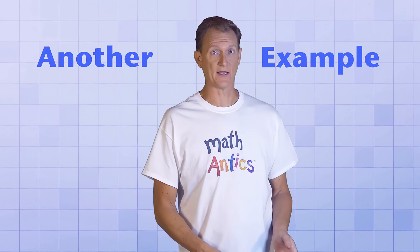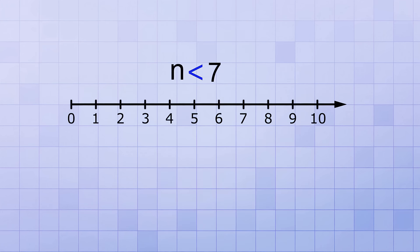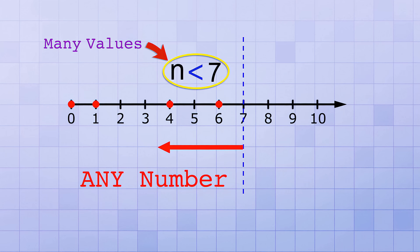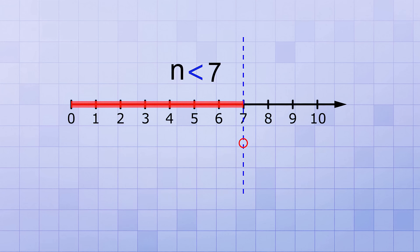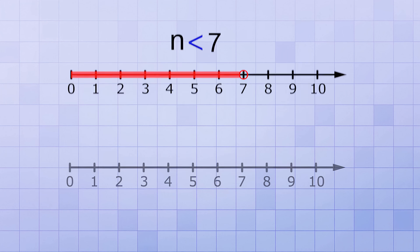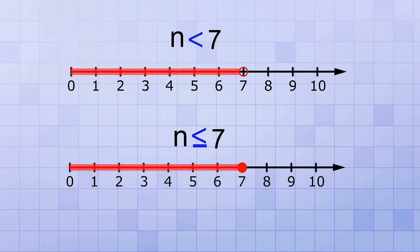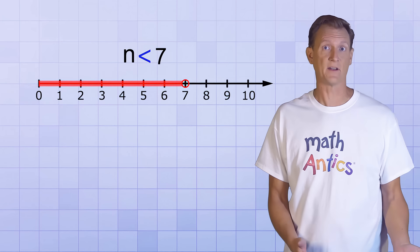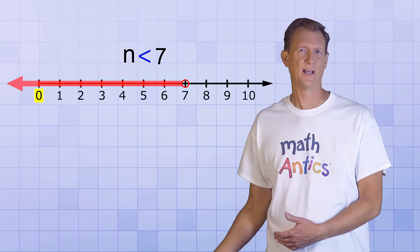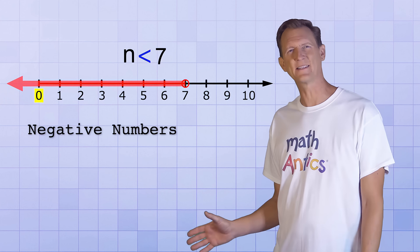Let's try another example. Let's graph the inequality n is less than 7. Just like with the last example, you can probably think of many values of n that would make this statement true. 6 is less than 7, so is 4, so is 1, so is 0. Any number that's to the left of 7 on the number line will work for this inequality, because values decrease as you go from right to left. Since there are an infinite number of possible answers, we'll just draw a line to cover all of them. And we'll leave an open dot exactly at 7 to show that point is not included, since 7 is not less than 7. Of course, if we had the inequality n is less than or equal to 7, we'd fill in that point to include 7 in the set of valid answers. Some of you may realize there are other numbers less than 7 not shown on this graph — they're found to the left of 0 on the number line. But don't worry about those negative numbers for now; that's a more advanced topic covered in a future video.